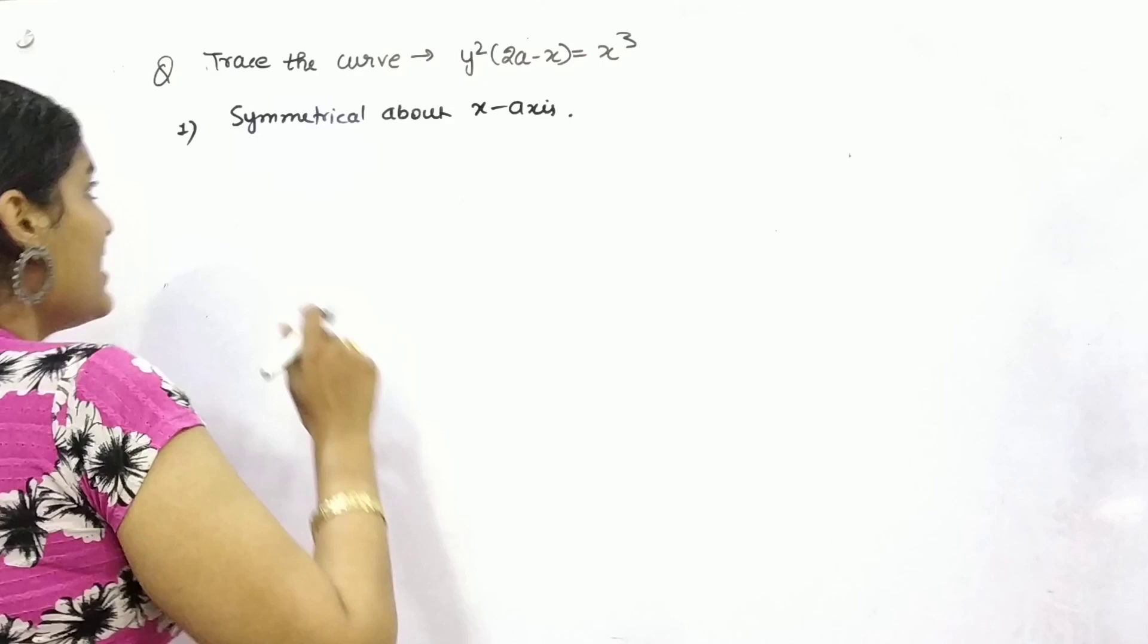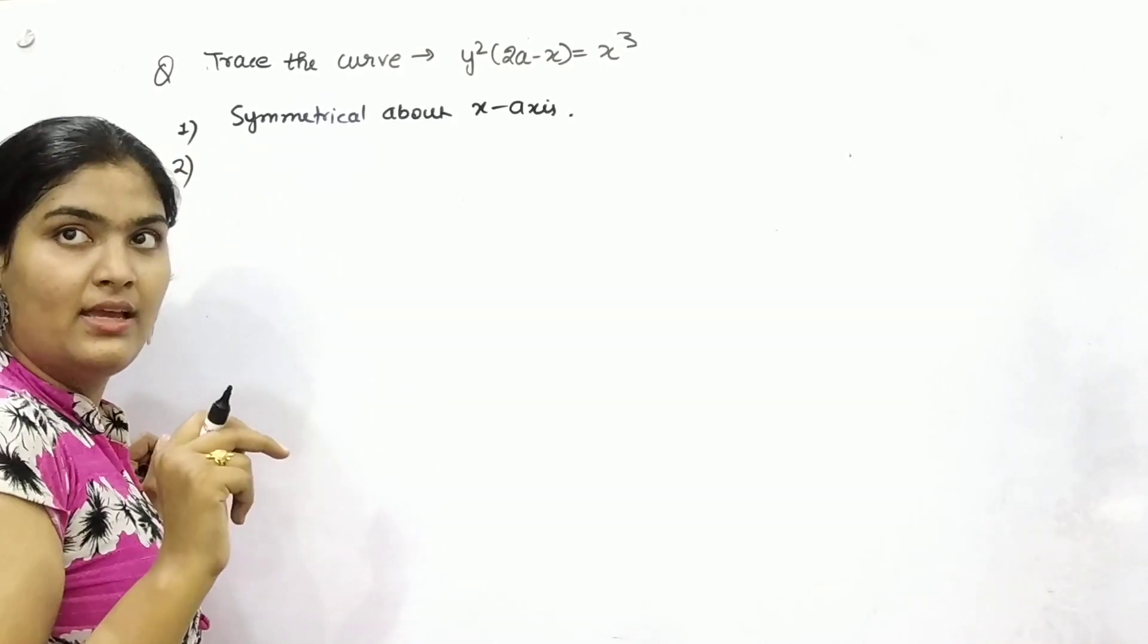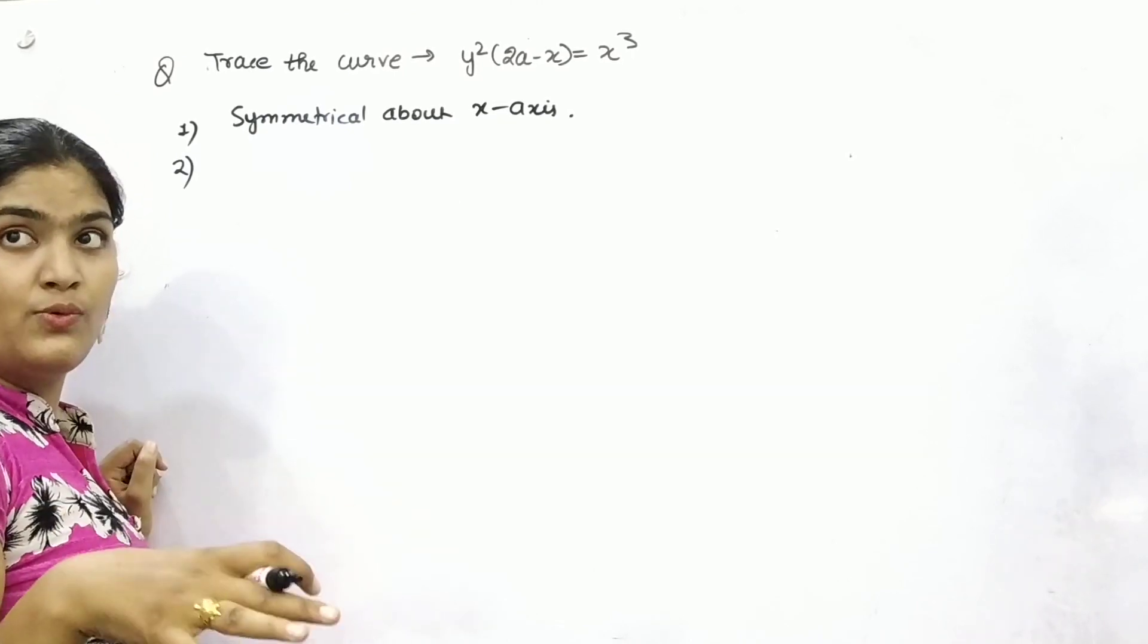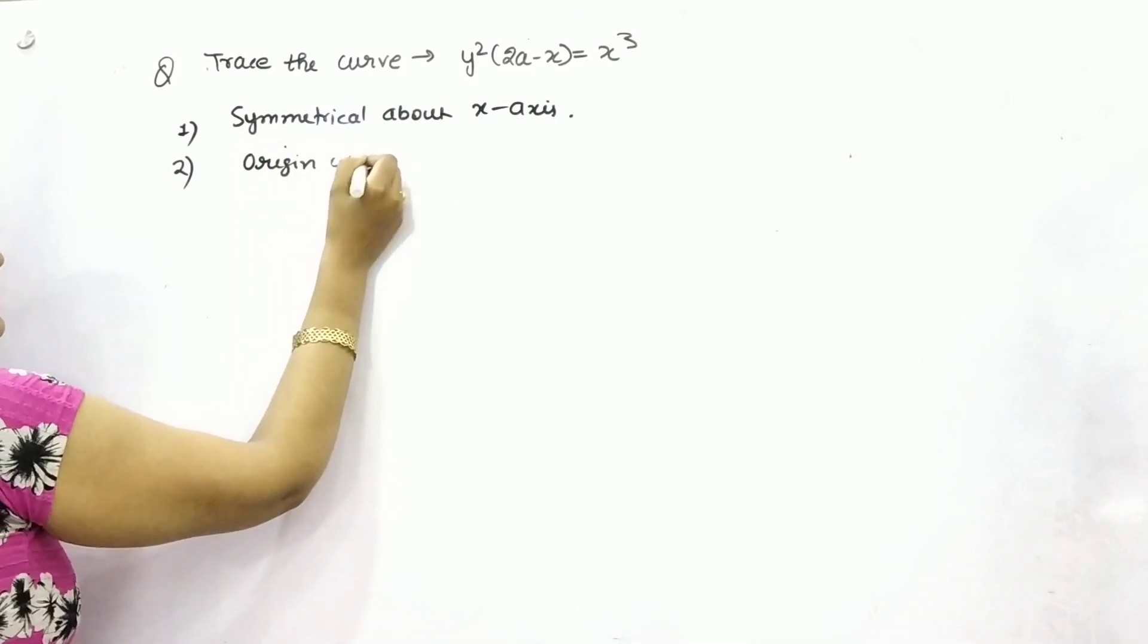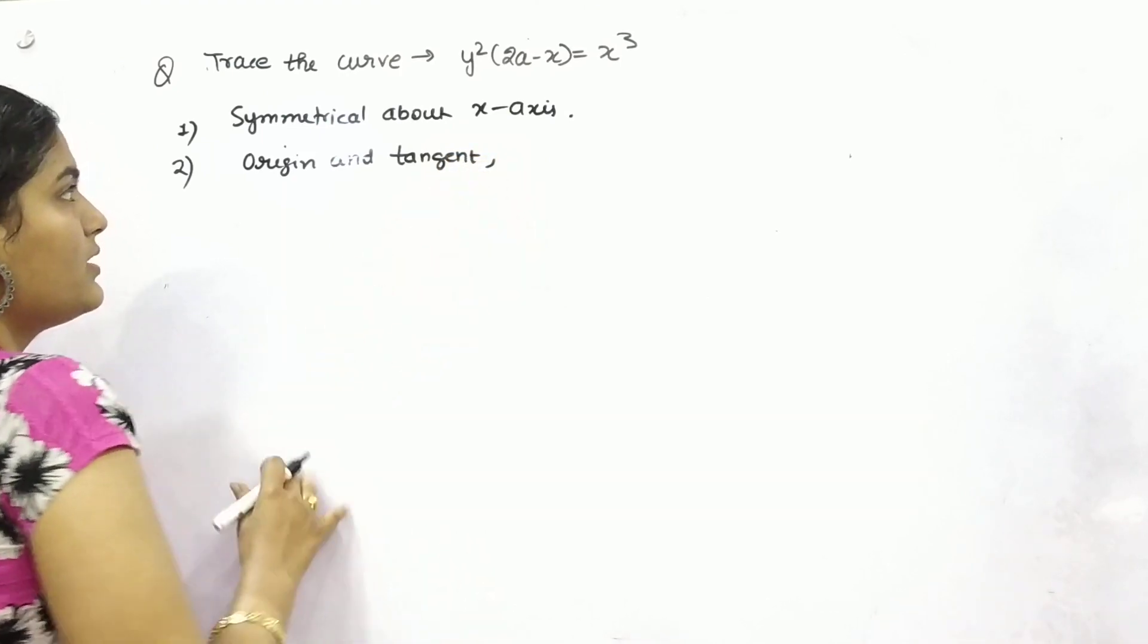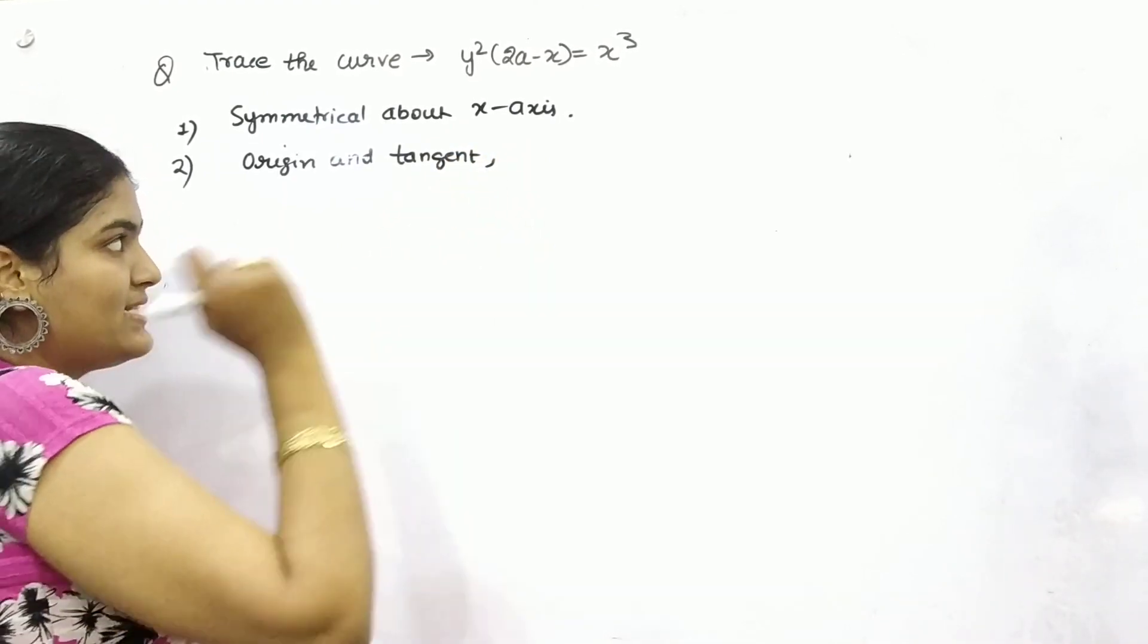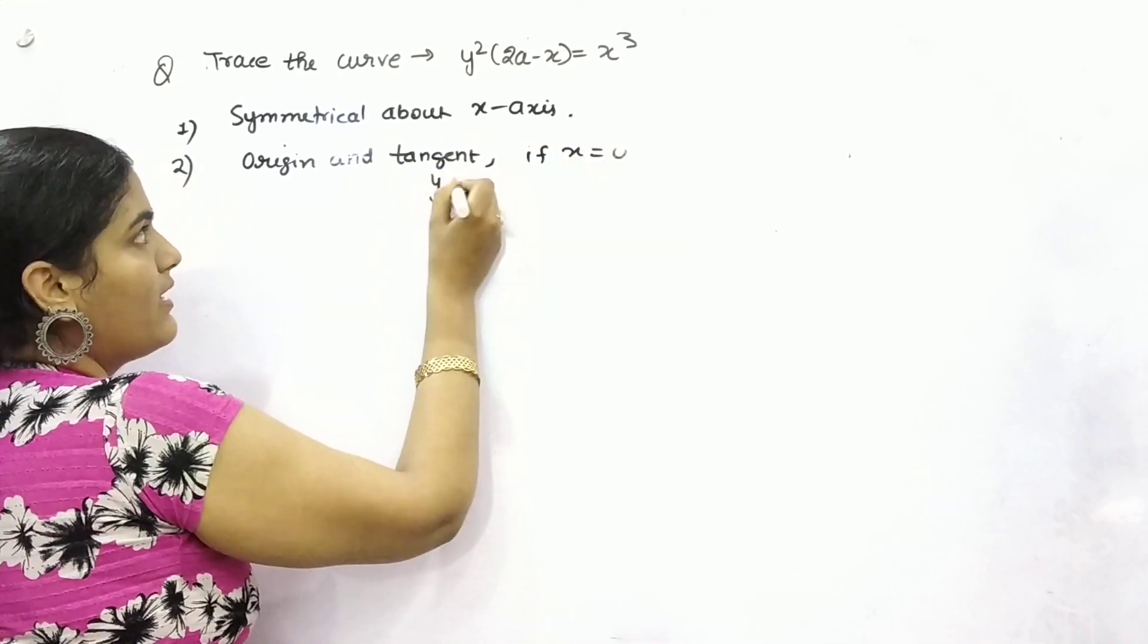First, you need to find out the points - whether it is passing through origin or not. So for origin and to find out tangent, what you need to do? Firstly, check it out. If x is 0, what will be your y?